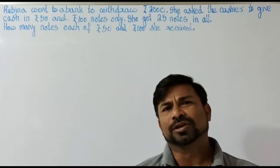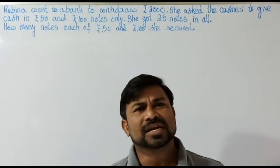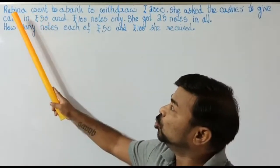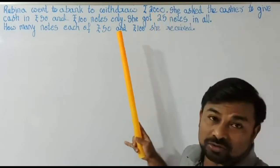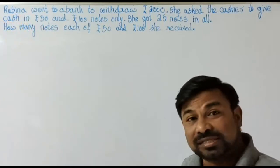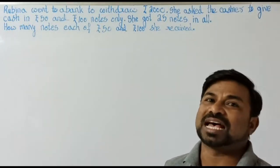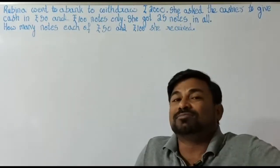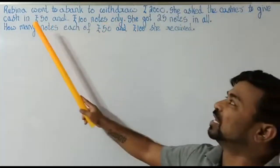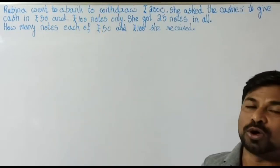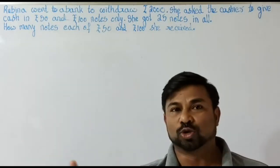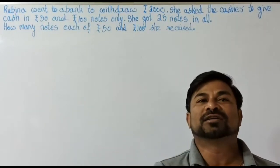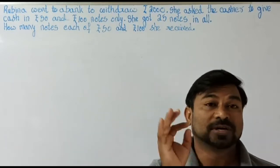In this concept I'm going to discuss something related to currency — going into a bank and asking for money in a specific denomination. Here is the question: Rubina went to a bank to withdraw rupees 2000. She is the customer, a depositor in the bank. She asked the cashier to give the cash in rupees 50 and rupees 100 notes only — not 200, 500, or 2000 rupee notes. She needs only 50 rupee notes and 100 rupee notes, with a total of 2000 rupees.